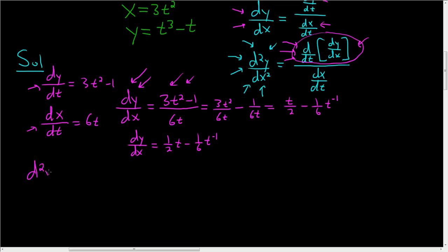So the second derivative is, well, it's the derivative of dy/dx with respect to t. So the derivative of 1/2 t is 1/2. And then here, you take the negative 1 and you bring it downstairs. So you get plus 1/6 t to the negative 2.